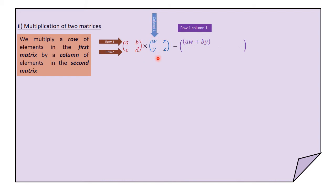We then move on to multiply the second row of the first matrix — CD — by the first column of the second matrix, which is WY. That gives us the element CW plus DY: C times W plus D times Y. Solving that gives the element in the second row, first column of the resulting matrix. We always multiply a row in the first matrix by a column in the second matrix.